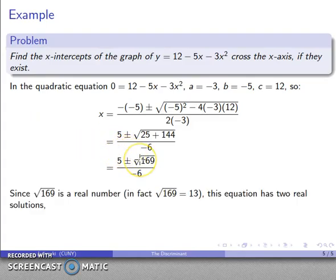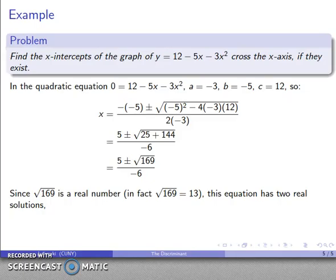And square root 169 is actually a real number. Square root only makes sense if I'm taking the square root of a positive number. 169 is definitely positive. In fact, square root 169 is 13. So this equation has two real solutions. The graph crosses the x-axis twice.